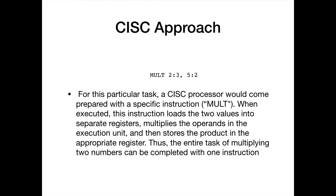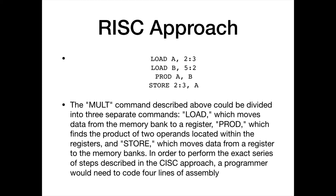In the RISC approach, RISC processors only use simple instructions that can be executed within one clock cycle. The 'mult' command described above would be divided into three separate commands: 'load,' which moves data from the memory bank to a register; 'prod,' which finds the product of two operands located within the registers; and 'store,' which moves data from the register to the memory bank. To perform the same series of steps as the CISC approach, a programmer would need four lines of assembly: load A from memory address 2,3; load B from memory address 5,2; compute the product of A and B; and store register A in memory address 2,3.